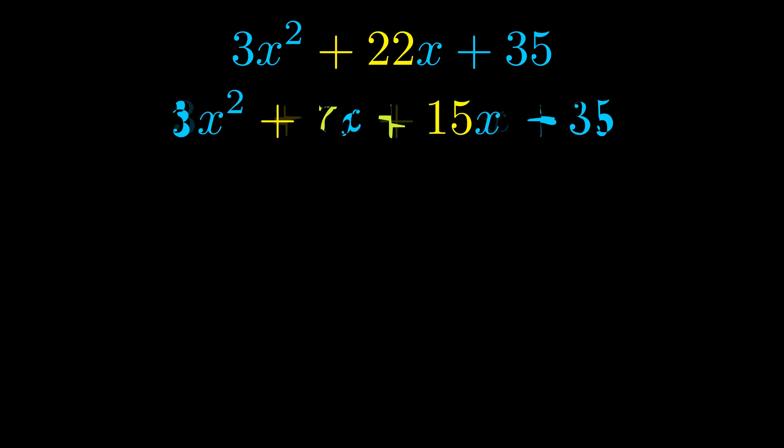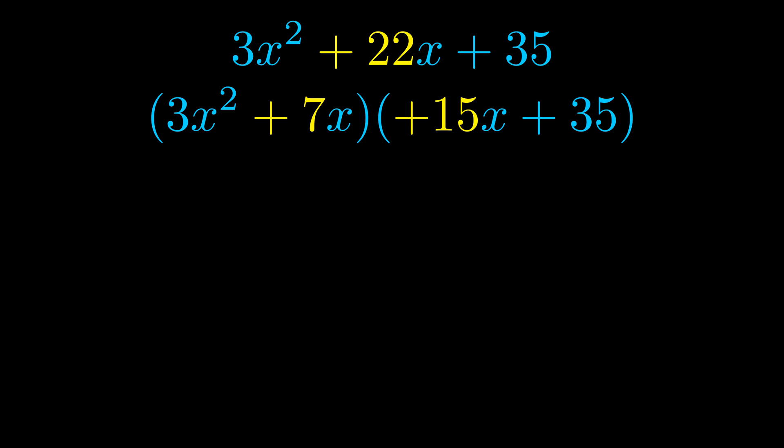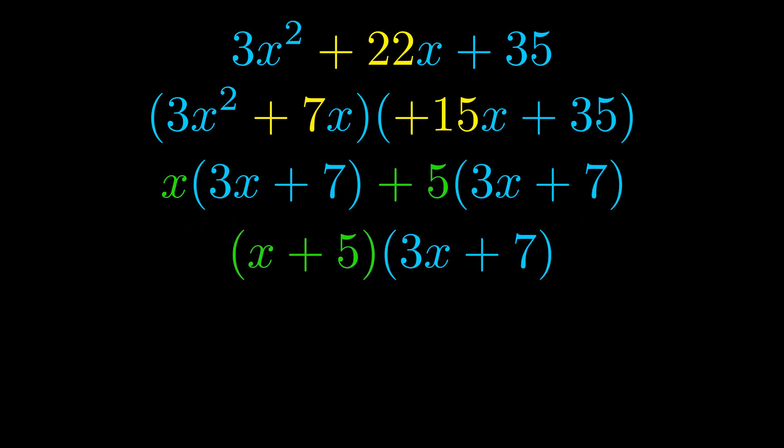Once we've done this we go ahead and we put parentheses around the first term in the last term. And we do that so that we can take the greatest common factor out of both terms. We can see the greatest common factor is now outside in green. Notice also how what remains inside of the parentheses is the same in both cases. The blue values are the same. Those blue values will become one of our factors and we will combine the two green values the GCFs that we pulled out to get the other one. And that is our fully factored equation.